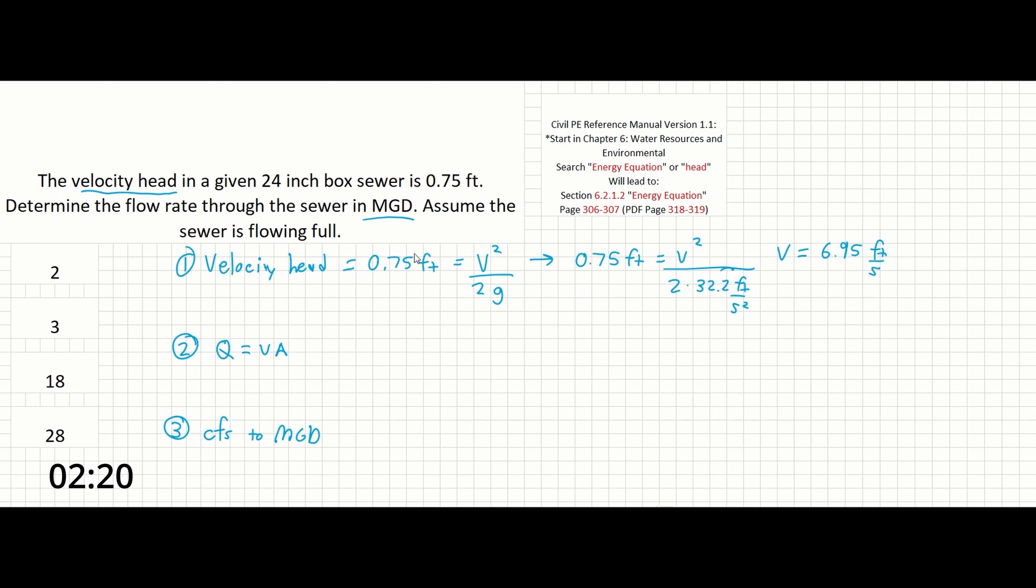The next step is multiplying v times a. So 6.95 feet per second times a box sewer of 24 inches - that's a 2 foot height and 2 foot width. So 2 feet times 2 feet gives us q which will be 27.8 cubic feet per second.